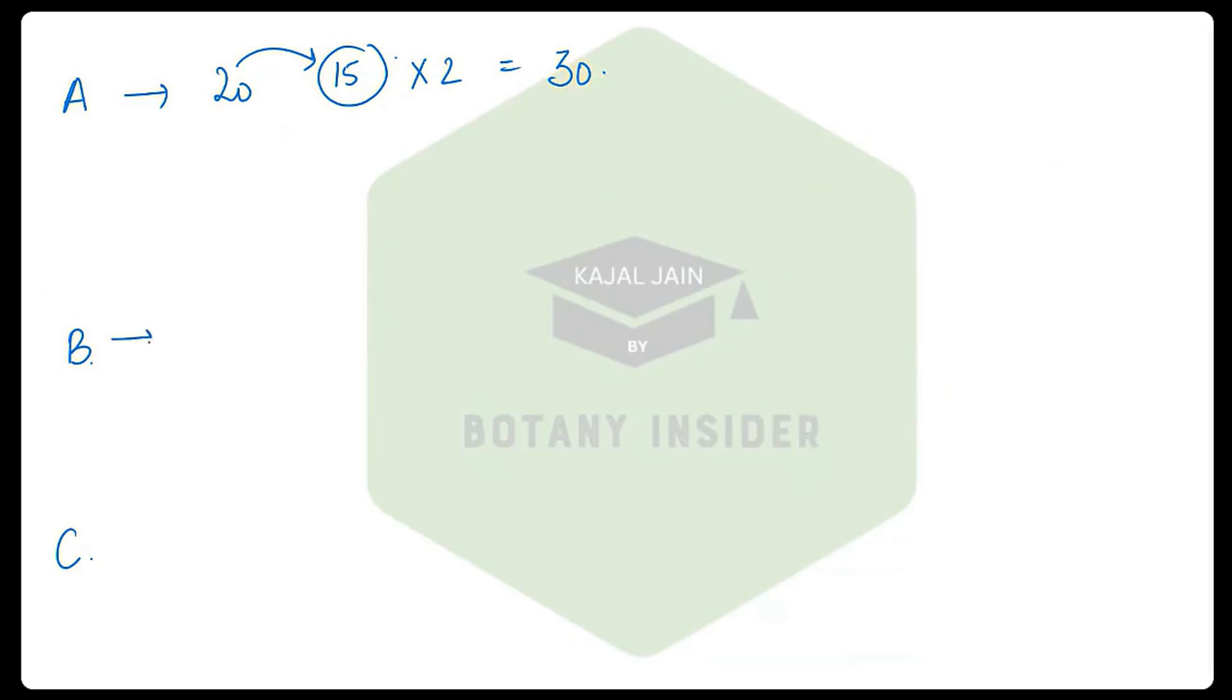Part B majorly has 50 questions in total; you have to do 35 out of it, two marks per question, 70 marks. Part C has 75 questions in total; you have to do only 25, every question four marks, 100 marks. The entire paper is 30 plus 70 plus 100—200 marks.